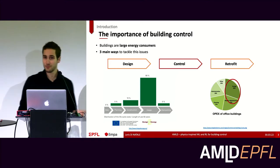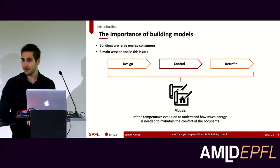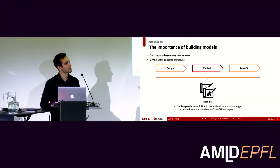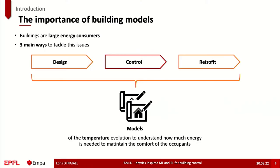Whatever you want to do with buildings, the first thing you need is a model. Buildings are very slow systems and you just can't experiment with everything. If you want your controller to work in summer and in winter, you can be very patient and wait six months, or you have to find a simulation to test it in all kinds of situations. When I talk about models, I mean the model of temperature — how temperature evolves in your building — so that afterwards we can minimize energy consumption while maintaining temperature at acceptable levels for occupants.